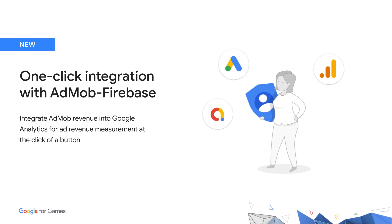And I have some great news to share. All AdMob publishers are now able to seamlessly integrate ads revenue data into Google Analytics for TROAS campaign optimization, at the click of a button, with no additional SDK implementation required. This will incorporate all AdMob platform revenue, including mediated ad networks and exchanges.